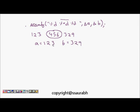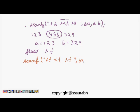For integers we use %d. Similarly for float we use %f. So for reading multiple floats: 'scanf("%f %f %f", &x, &y, &z)', where x, y, and z are float variables. For a double, you use %lf as the format specifier.